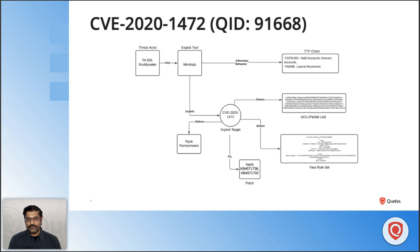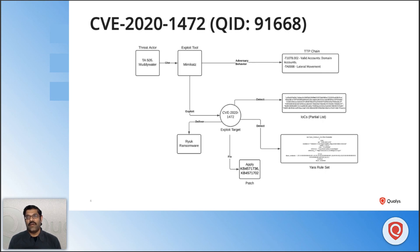For post-exploitation, YARA rule signatures can be used to scan your organization for ZeroLogon exploits and Mimikatz scripts executing in your environment. Microsoft released patches immediately after disclosure, and from February 9, 2021, Microsoft is introducing an enforcement mode that rejects connections from any device still hosting the vulnerable NetLogon protocol.